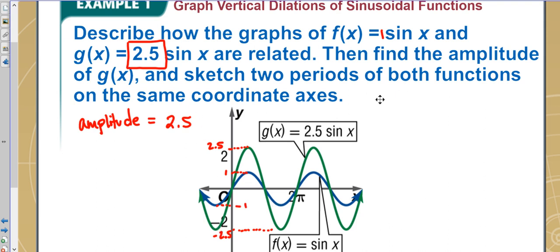So that's the difference between these two. It says sketch two periods. What that means is two complete cycles.